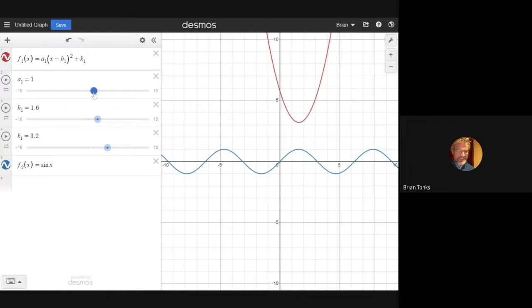Now horizontal and vertical stretch and compression on a parabola look the same. So the one that's outside here would go through different values than one inside here, but I only need one of them to accomplish the same result. When we do transformations on sine, we're going to need both.